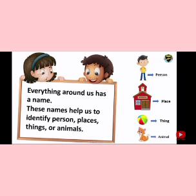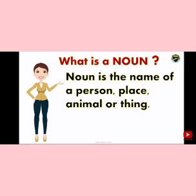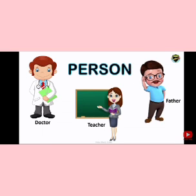A noun is the name of a person, place, animal, or thing. This means to be able to recognize its name. In Urdu: noun کیا ہے — کسی بھی انسان کا، جگہ کا، جانور کا، اور کسی بھی چیز کا نام۔